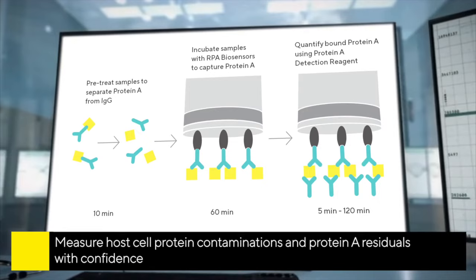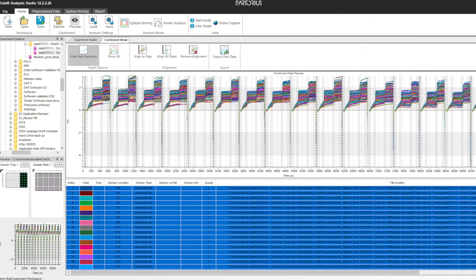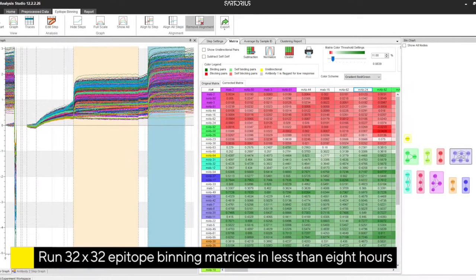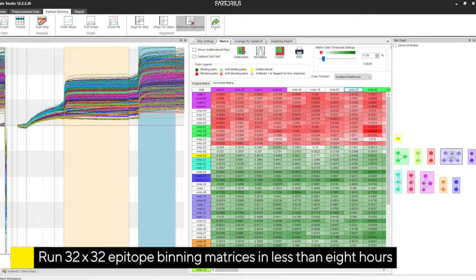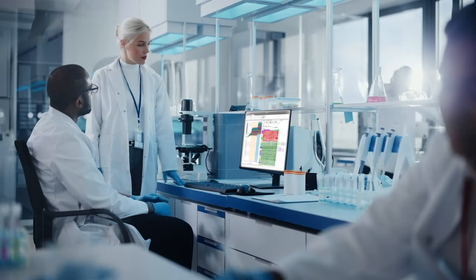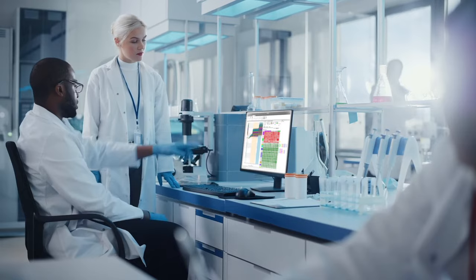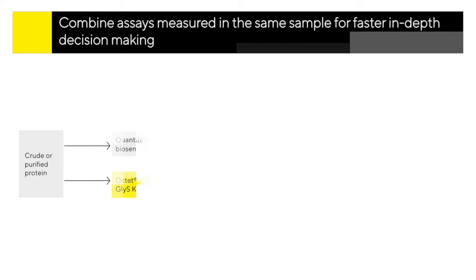These systems are also ideally suited to epitope binning experiments. For example, with the Octet RH96, a 32 by 32 matrix can be completed in record time, with a dedicated epitope binning analysis function to enable easy visualization of datasets. The software also provides a flexible data matrix that can accommodate a variety of cross-blocking formats.